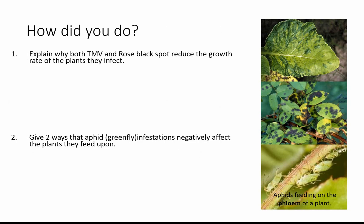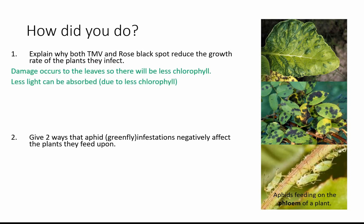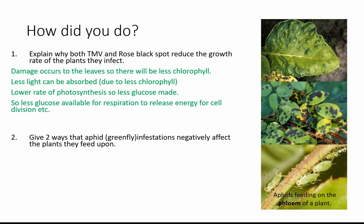For TMV and rose black spot, the key thing is it's affecting photosynthesis. The leaves are damaged, there's less chlorophyll, which means less light is absorbed, so the rate of photosynthesis will be lower and you'll make less glucose overall. The key link is: glucose is needed for respiration to release energy — make sure you say 'release' not 'produce' — and that energy is needed for cell division and making the large molecules required to build new cells.